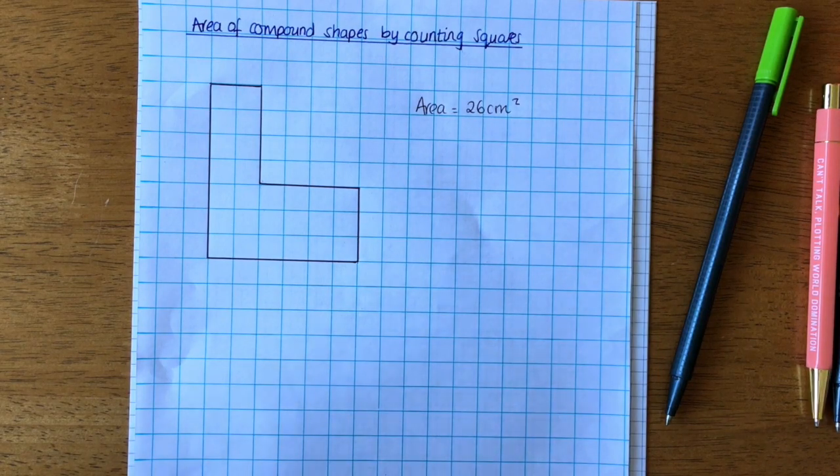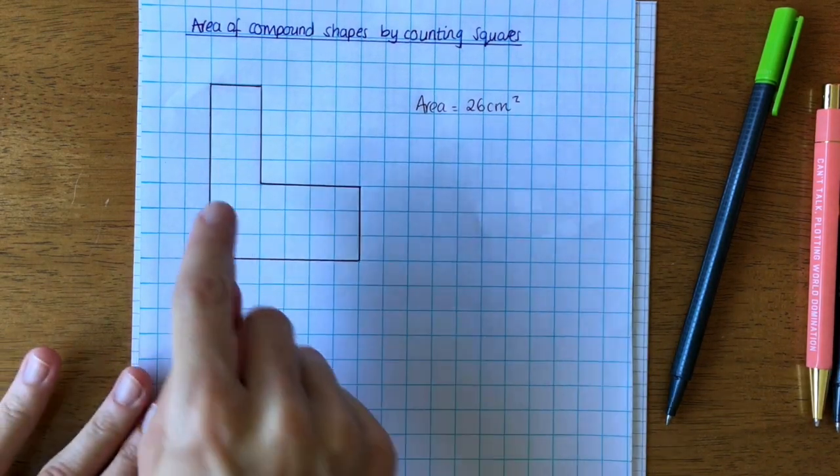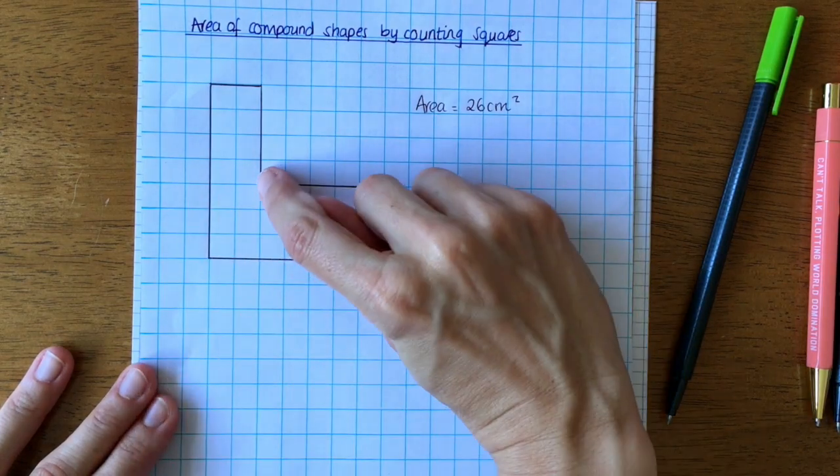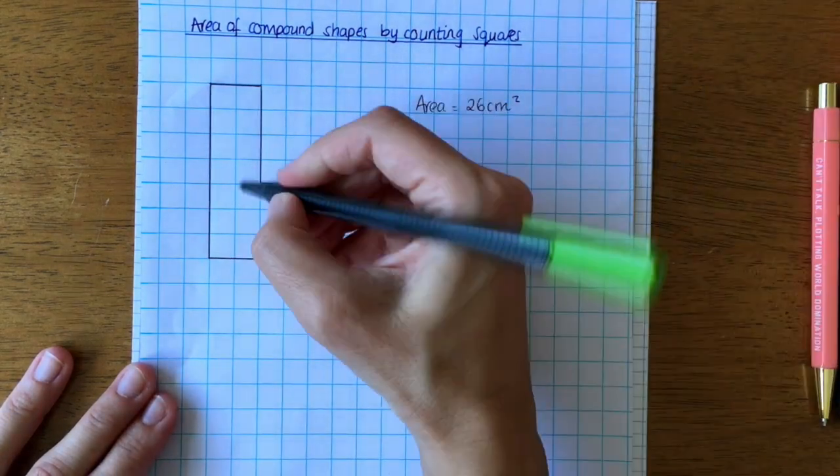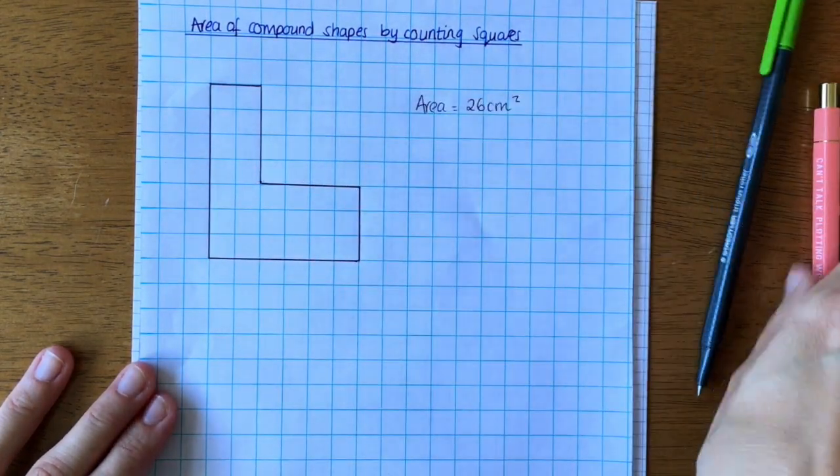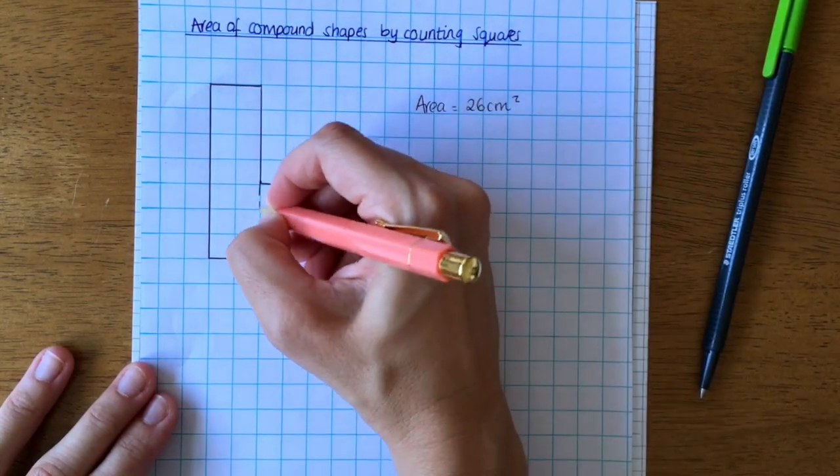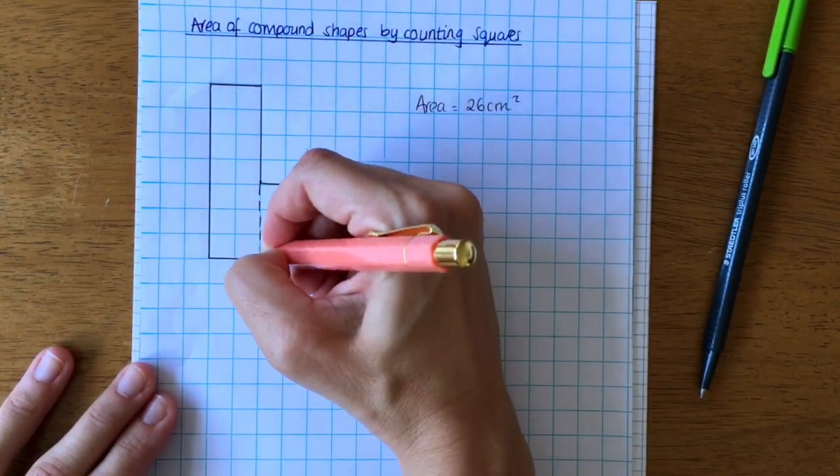Now there are two ways I could split this shape. I could split it across here or I could split it down here. It's entirely up to you how you do it. It will give you the same answer.